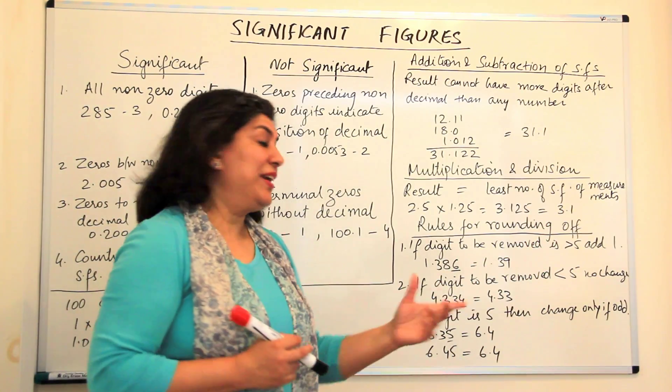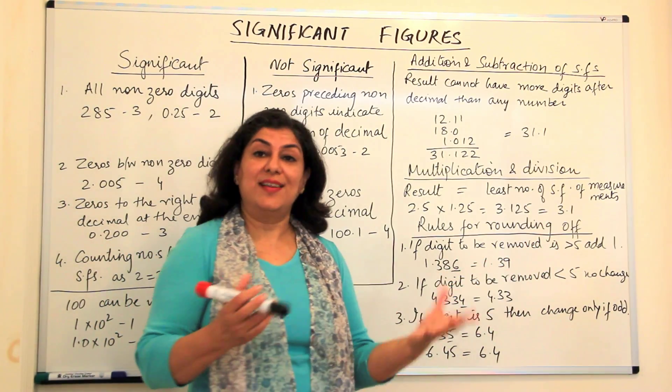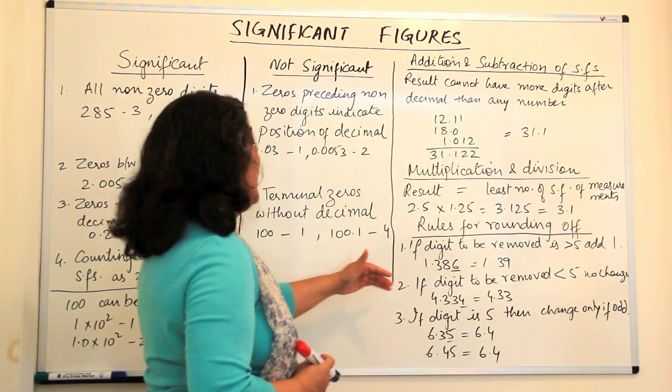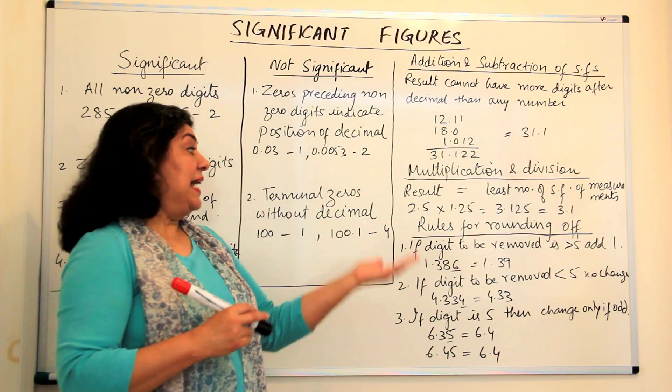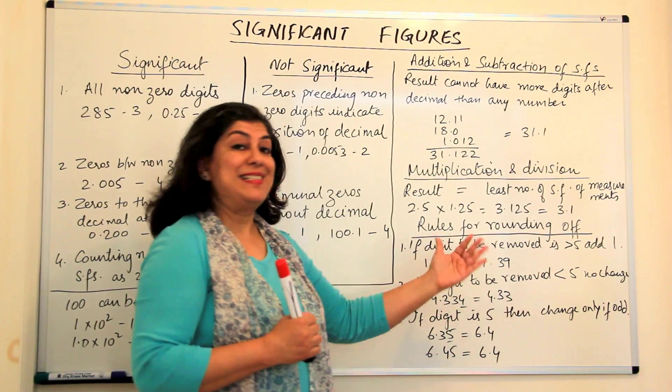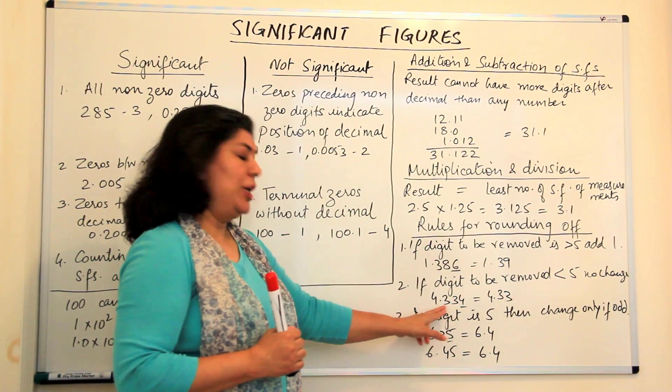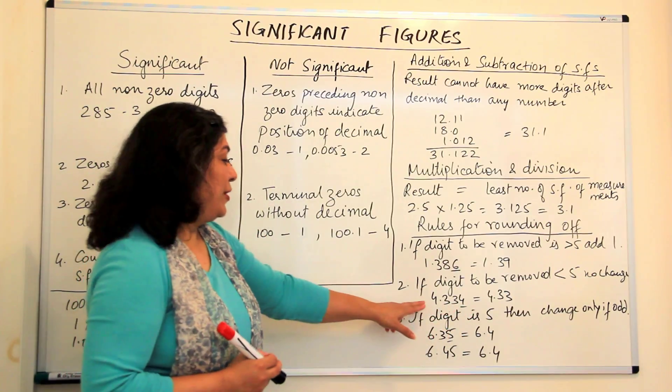Because in significant figures as it is, the last one is uncertain. So there is a scope of error of plus minus 1. If a digit has to be removed and that digit, the one that has to be dropped is less than 5, then we do not change the preceding number.